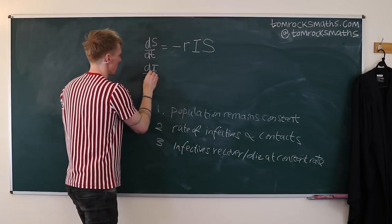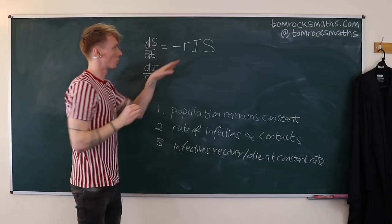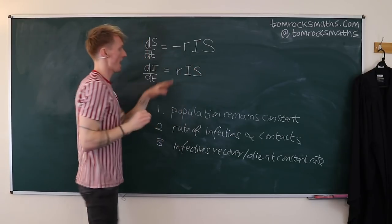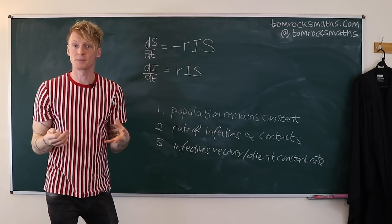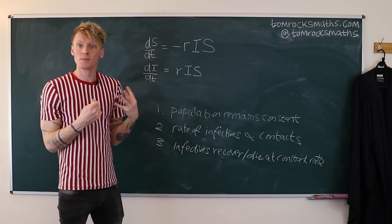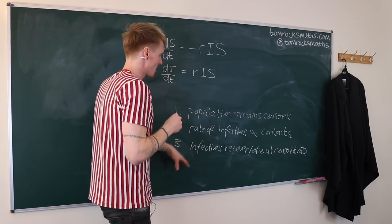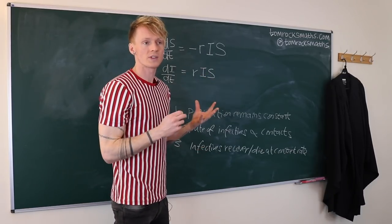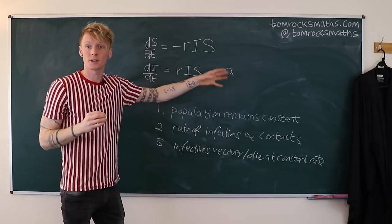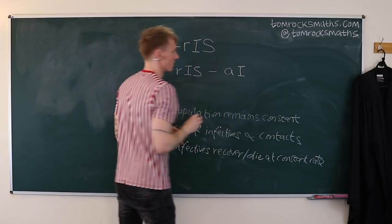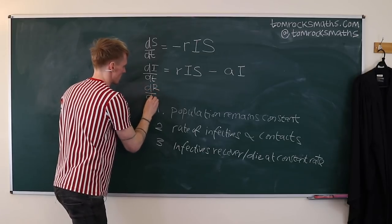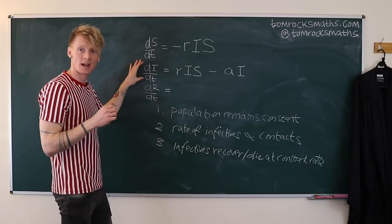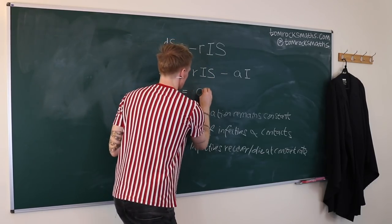For the infectives, dI/dt grows according to people moving from susceptible into infective — so we have plus r·I·S, the same term as before but now positive. We also have by assumption three that infectives recover or die at a constant rate a, so we subtract a·I. As people leave the infective category, they move into the removed category at that same rate.